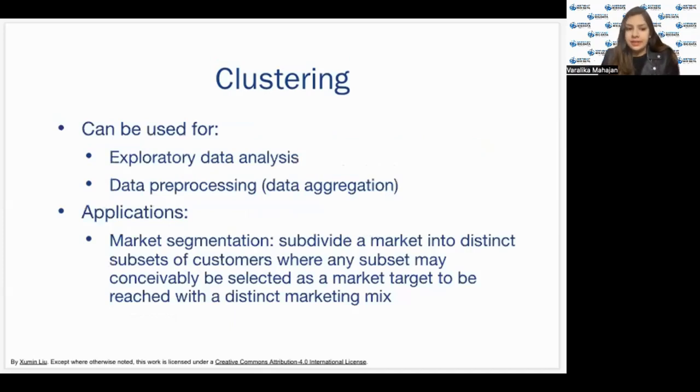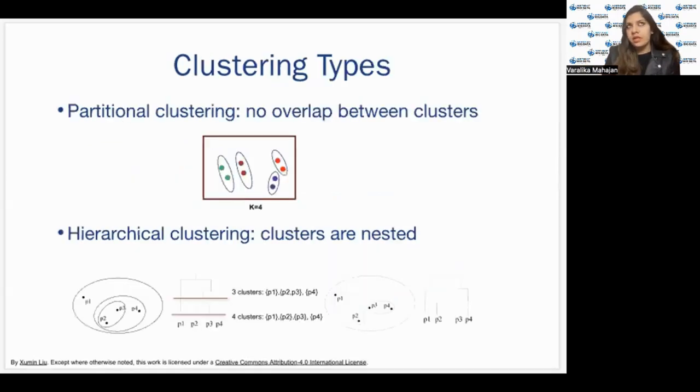So why do we use clustering? Clustering is typically used for exploratory data analysis as the clustering results can help to understand the underlying structure organization of the data objects. It can also be used to perform data processing to aggregate the similar objects together using the center point of each cluster and represent the entire cluster as a whole. This can reduce the analysis complexity as well as deal with the noises of data. So one common example of this is market segmentation, which is to subdivide a market into distinct subsets of customers, where any subset may conceivably be selected as a market target to be reached with a distinct market mix. It finds many applications. This is one important example used in the industry.